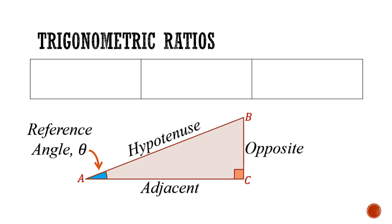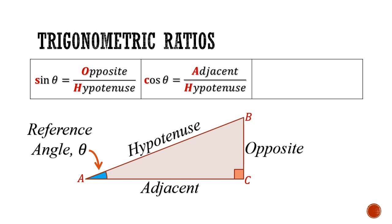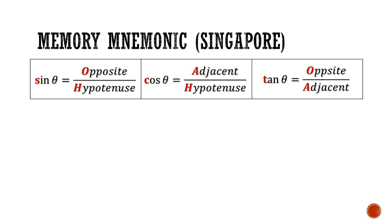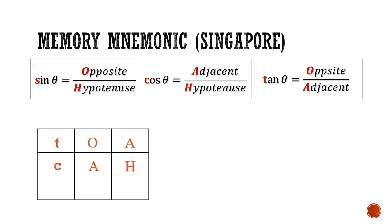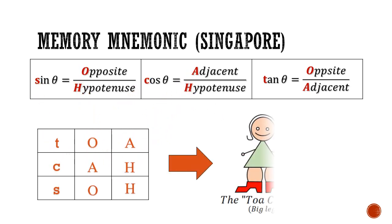Now that we know the name of the sides, let's define the trig ratios. Sine is defined as the ratio of the opposite length over its hypotenuse. Cosine is the ratio of the adjacent side against the length of the hypotenuse. And lastly, tangent is the ratio of the opposite side over the length of the adjacent. Now the way to remember these three definitions vary from country to country, but in Singapore, we have our own convenient mnemonic to remember this. Arranging the first three letters of the ratios, we get this phrase, which also means big leg auntie in our Hokkien dialect.